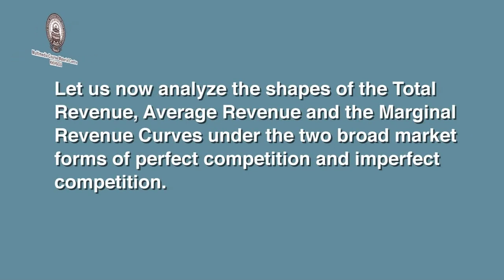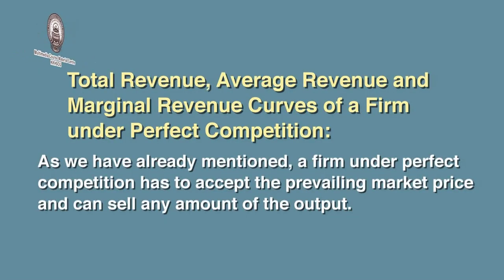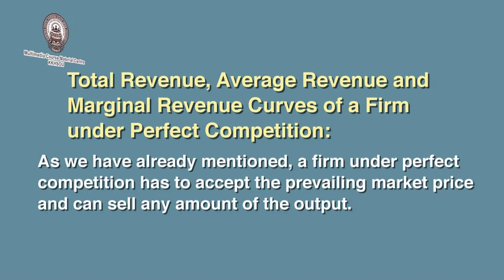Let us now analyze the shapes of the total revenue, average revenue, and marginal revenue curves under the two broad market forms of perfect competition and imperfect competition. Let us first consider the total revenue, average revenue, and marginal revenue curves of a firm under perfect competition. As already mentioned, a firm under perfect competition has to accept the prevailing market price and sell any amount of output at that price. Thus, a firm under perfect competition will earn average revenue, total revenue, and marginal revenue similar to the following Table 6.1.